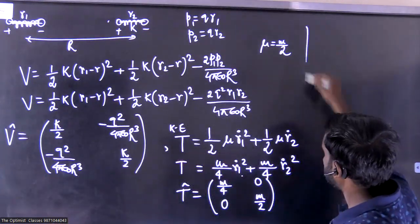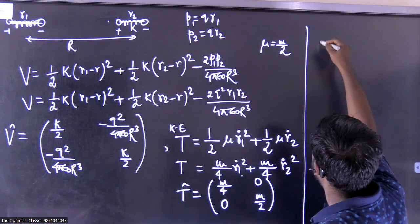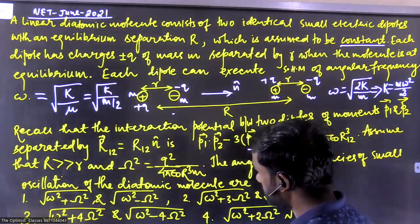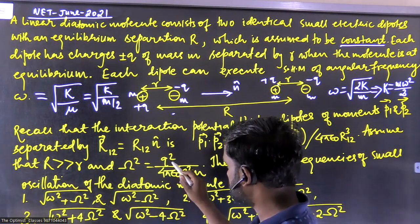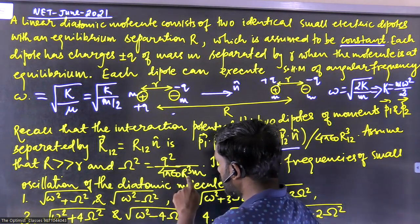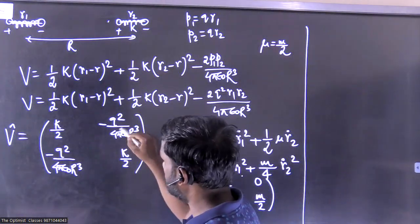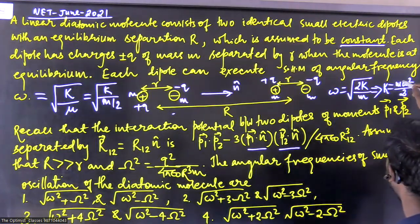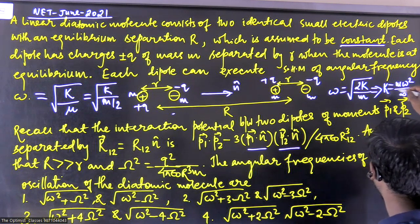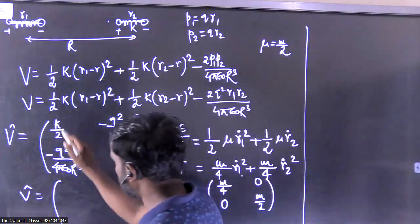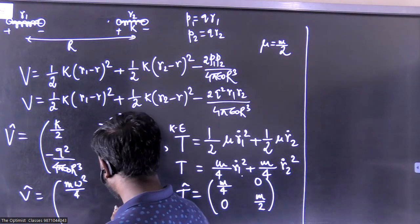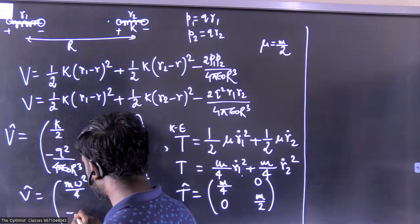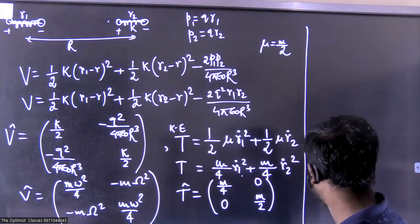Now I'll use the characteristic equation to find the normal mode frequencies. Using the notation given — Ω² = q²/(4πε₀ R³ m), so q²/(4πε₀) = mΩ² — we substitute into the potential matrix. Also, k/2 = mω²/4. So the potential energy matrix becomes: diagonal elements mω²/4, and off-diagonal elements -mΩ². The kinetic energy matrix has diagonal elements m/4.